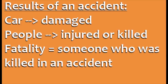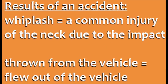Finally, let's look at the results of an accident. We can say the car is damaged, and the people in the cars are injured or killed. A more formal word for someone killed in an accident is a fatality. For example, there were three fatalities, or, luckily, there were no fatalities. One common injury in car accidents is whiplash — an injury to the neck due to the sudden impact, when your head goes forwards or backwards very suddenly. If someone in the car wasn't wearing a seatbelt, they could be thrown from the vehicle, meaning they flew out of the vehicle and landed some distance away.